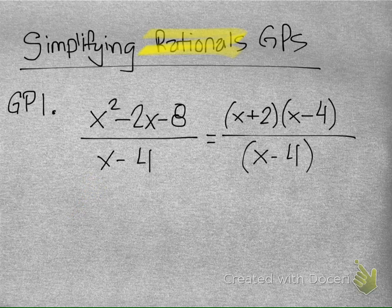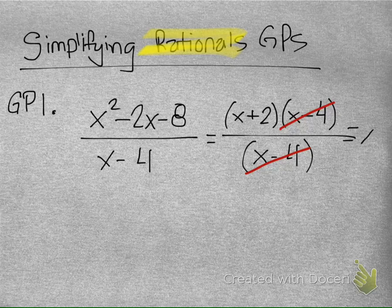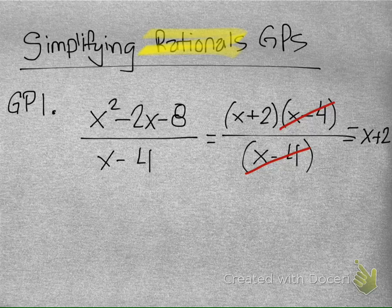That way you have a target, something that you're looking for. I have my x minus 4. That cancels out my x minus 4 on my denominator, and that gives us a final answer of just x plus 2. If you need to copy that down, go ahead and take a moment. Hit pause on the video. Otherwise, we're going to do GP number 2.